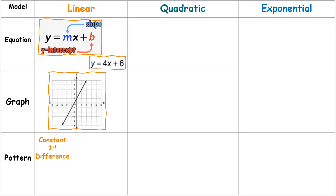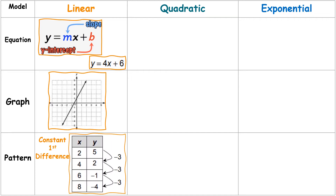The pattern of a linear function: if you have a table, there's a constant first difference. You look at your y-values and observe the pattern — here we're subtracting three from each one, so that is a constant change of the same number.